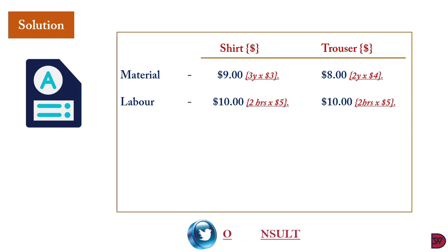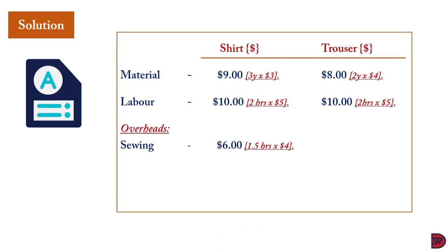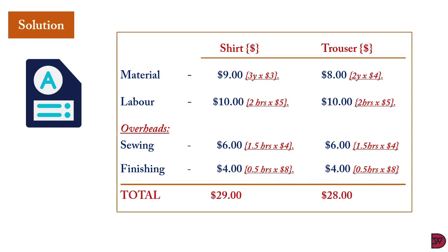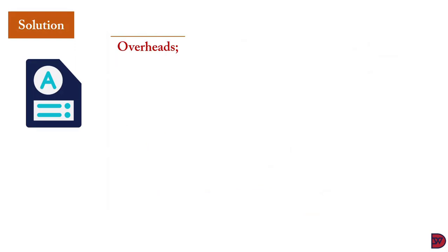In the solution, material is $9 for shirts and $8 for trousers; labor is $10 for both. For overheads with two departments: sewing overhead is $6 per shirt (1.5 hours × $4 per hour overhead rate) and $6 per trouser (1.5 hours × $4 per hour). Finishing overhead is $4 per shirt (0.5 hours × $8 per hour) and $4 per trouser (0.5 hours × $8 per hour). This gives a total cost of $29 for shirts and $28 for trousers.